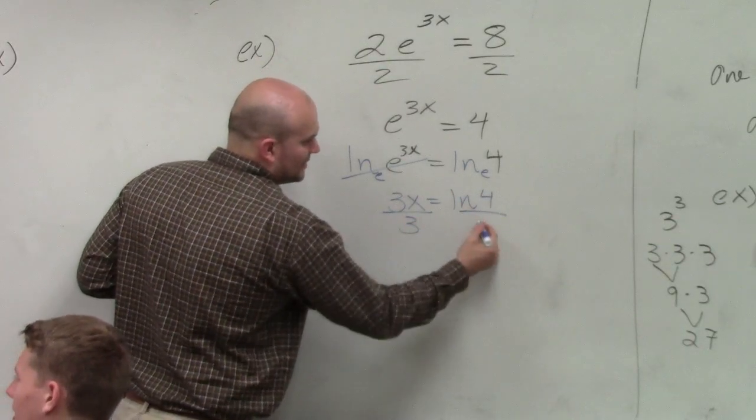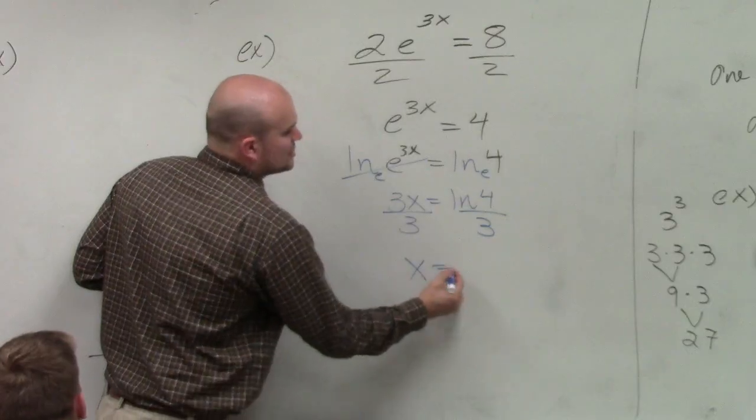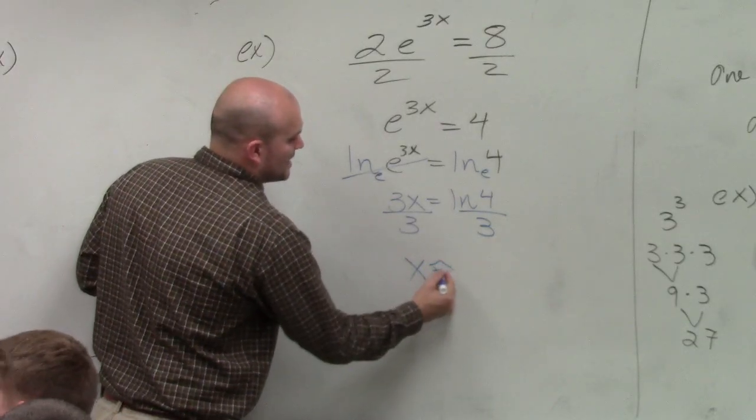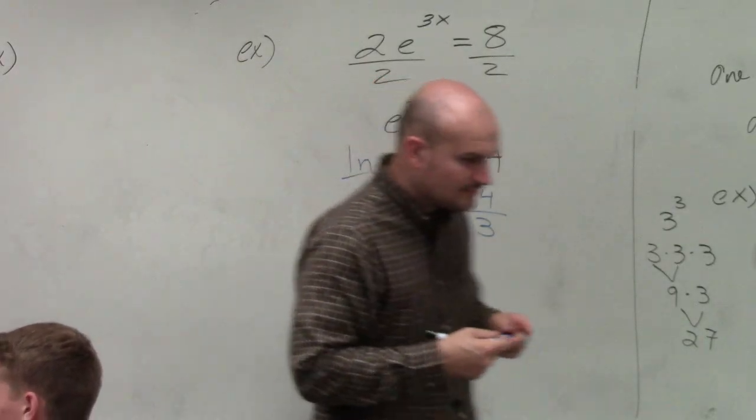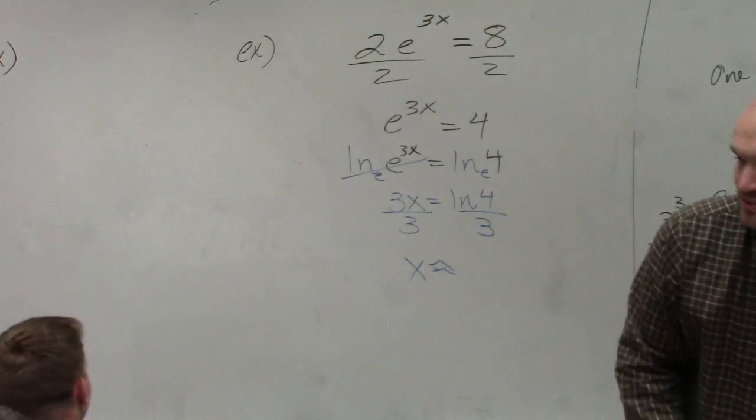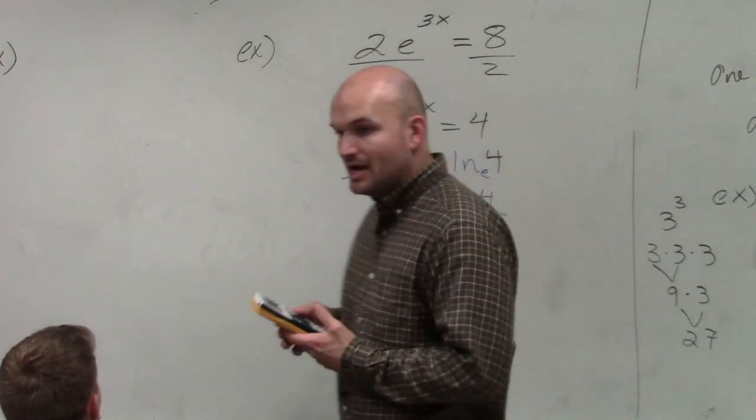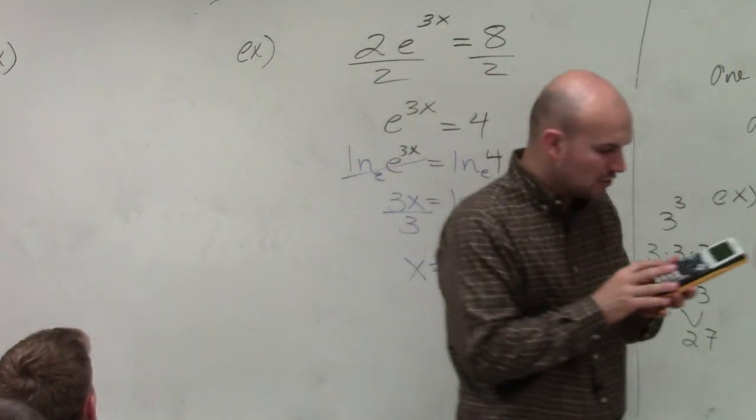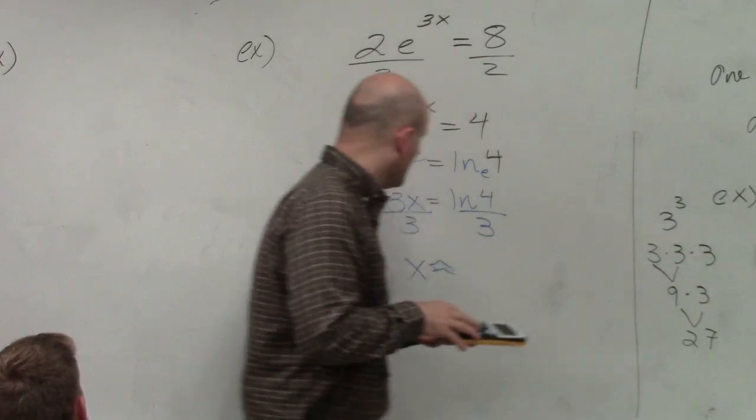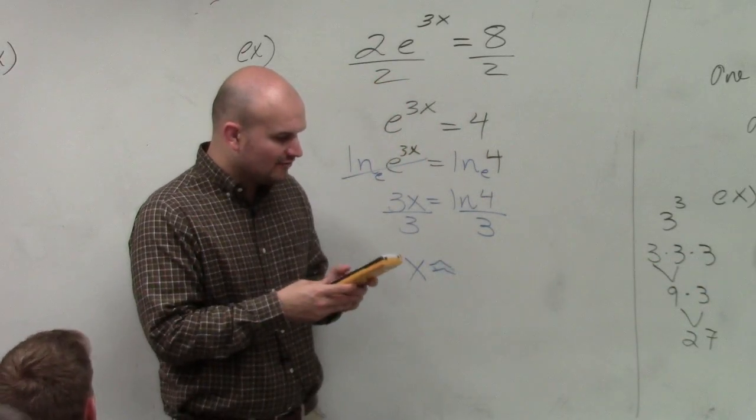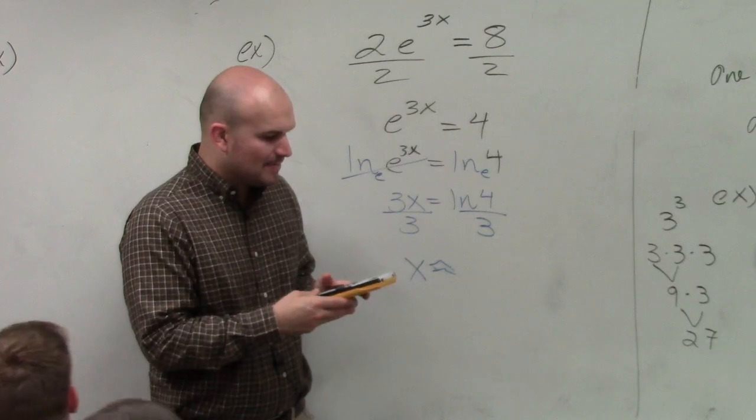Now, I divide by 3. So x equals, or we're going to say is approximately. In your calculator, you'll see there's a regular logarithm and there's a natural logarithm, which is the ln. So all I'll simply do is I'll take ln of 4 and then divide that by 3.